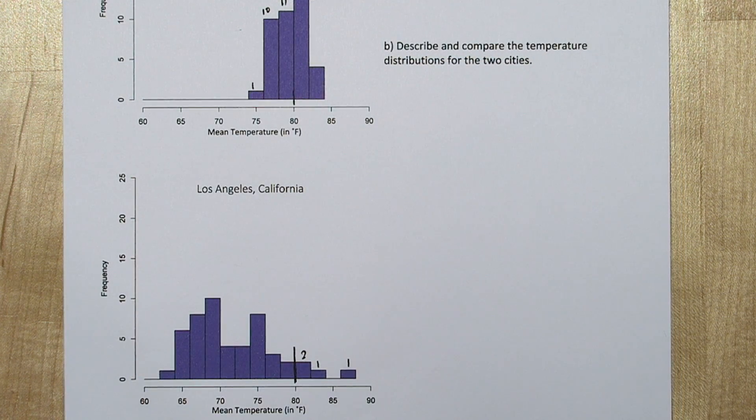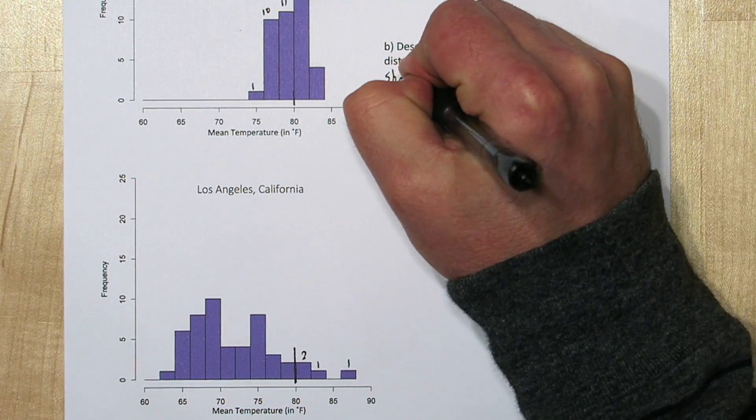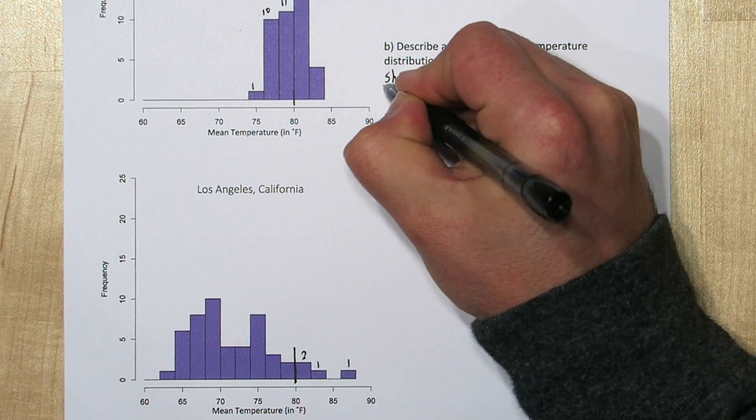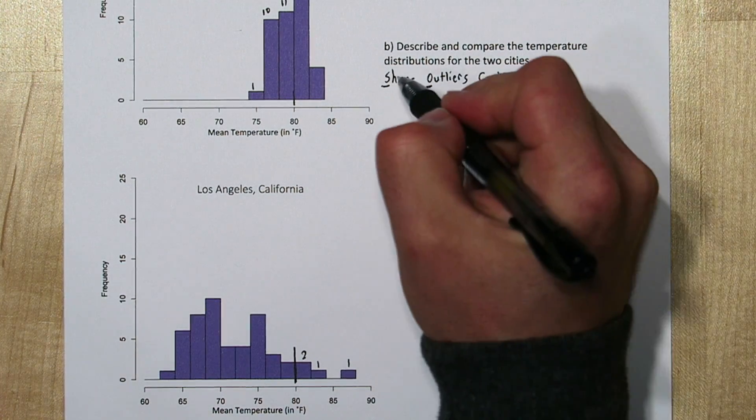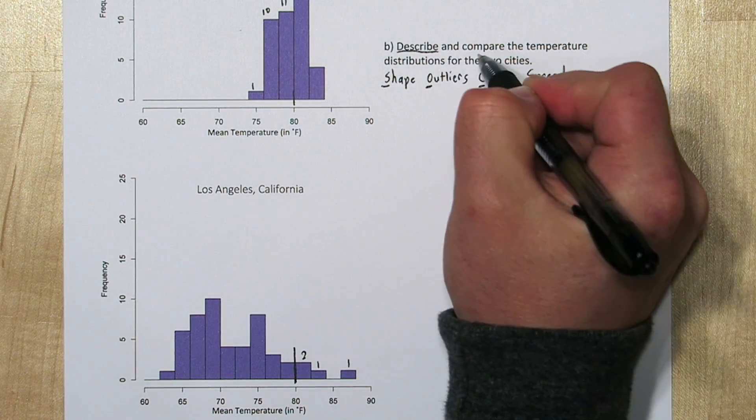Any time you're describing a distribution you want to talk about shape, outliers, center, and spread. The acronym SOCKS can help you remember this. We want to describe, but we also want to compare.